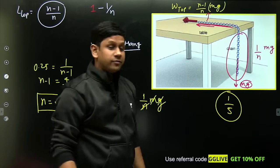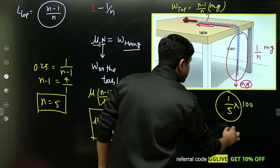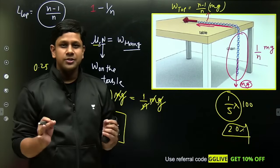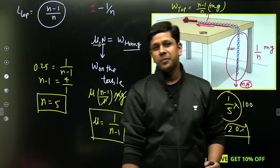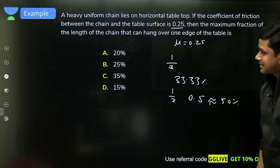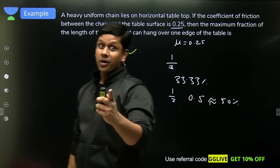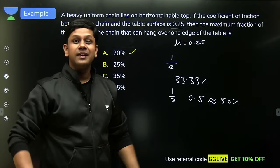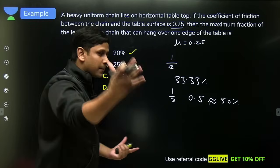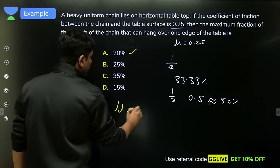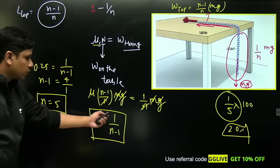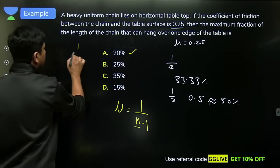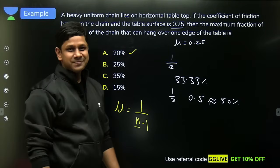And when you multiply 1/5 by 100, you get the answer in percentage: 20%. This is the best possible solution for this question, just in few minutes. And this is how you should also solve it. So yes, the correct answer is 20%. From now onwards, if you see a chain problem asking what percentage can hang, you simply write μ = 1/(n-1), that's it. From there n comes out, and it means 1/nth portion can hang.